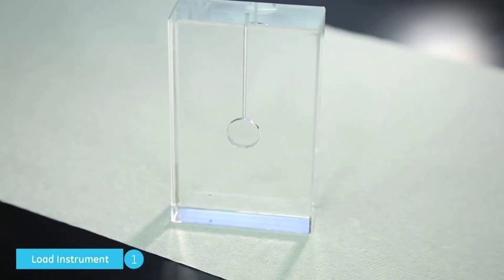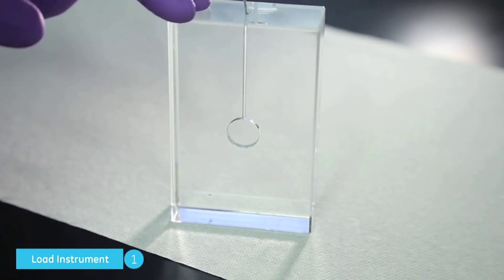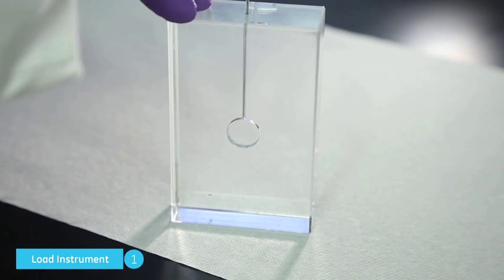I'd like to demonstrate how to load the sample cell using this transparent model. Load your filling syringe with about 300 microliters of sample. Slowly insert the loading syringe into the sample cell port. Gently touch the bottom and come back up so that you are about one millimeter from the bottom.